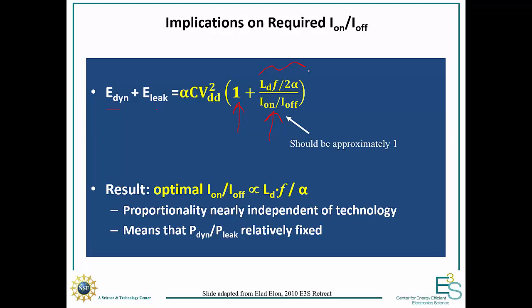What that means is that our optimal on-off ratio is given by the logic depth times the fan out divided by the activity factor. And what's interesting is that this proportionality is nearly independent of the technology. So what this means is that you typically want the dynamic power over the leakage power to be 1.